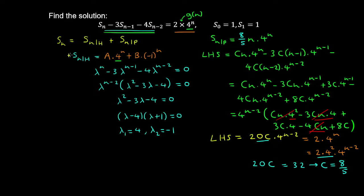Superimposing the homogeneous and particular solutions gives us the general solution to this recurrence relation.